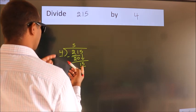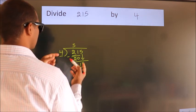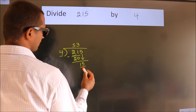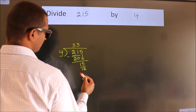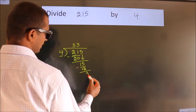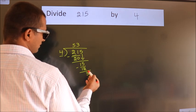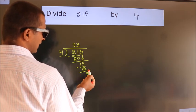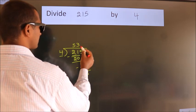A number close to 15 in the 4 table is 4 threes, 12. Now we subtract. We get 3. After this, no more numbers to bring down, so what we do is...